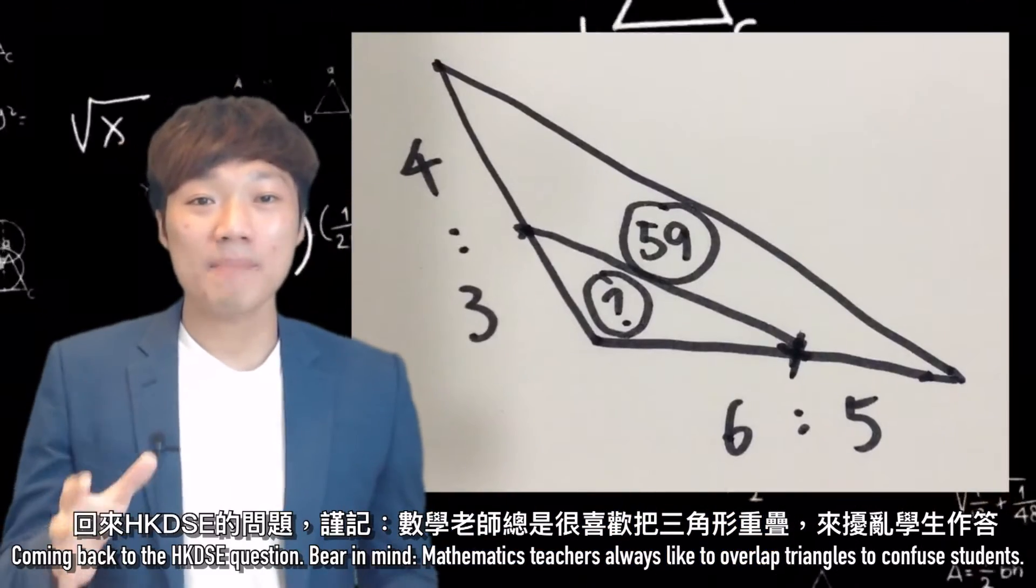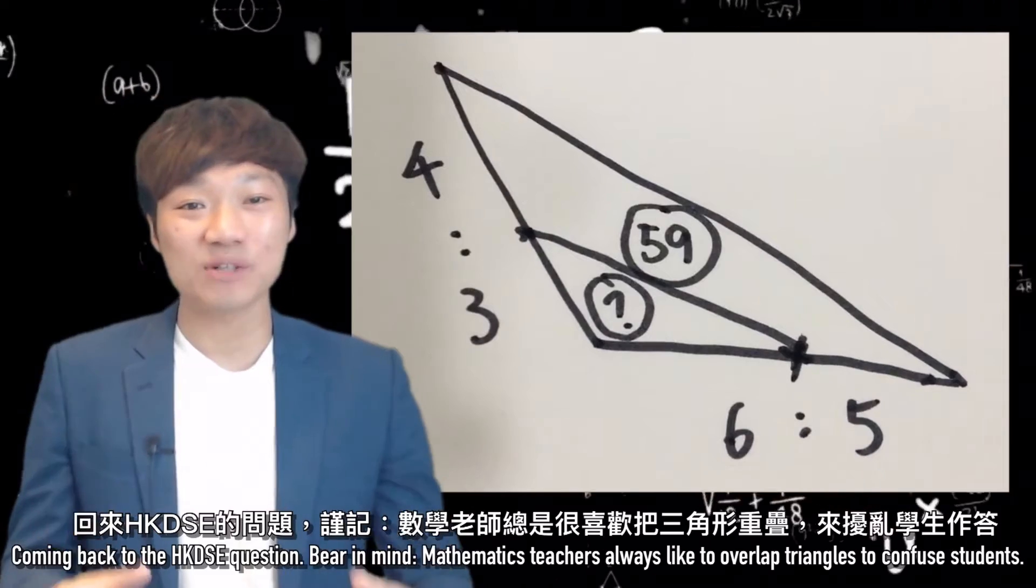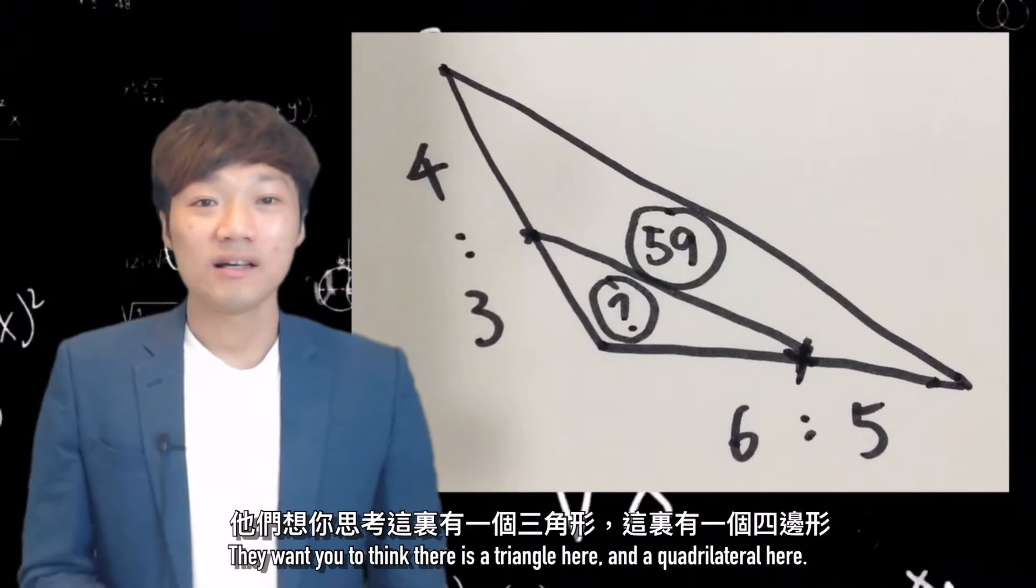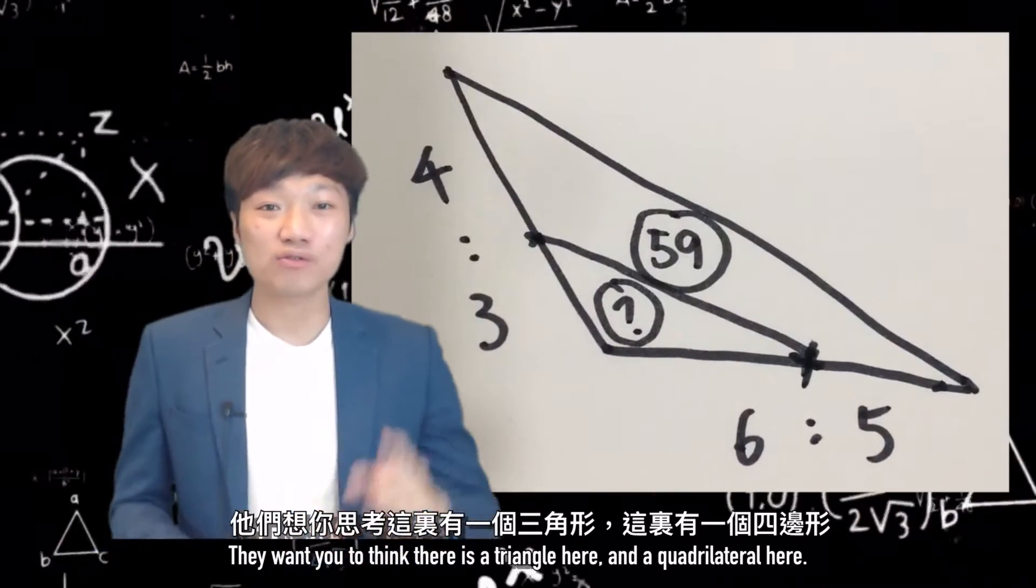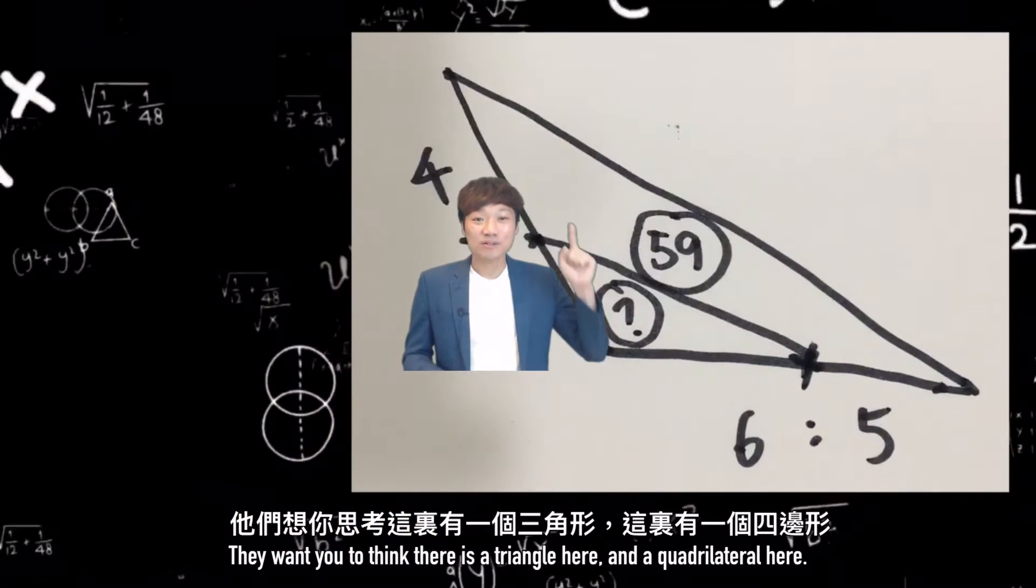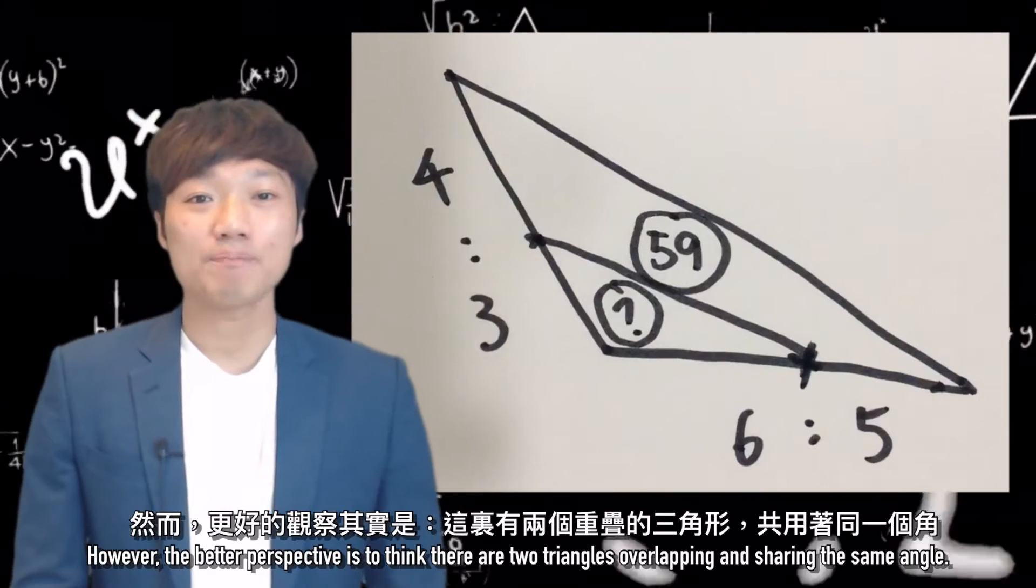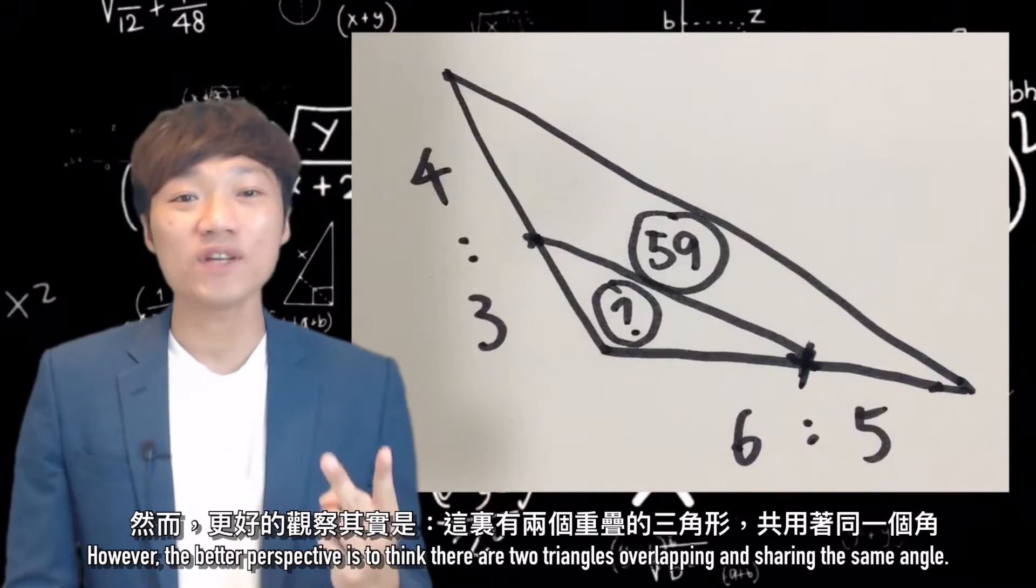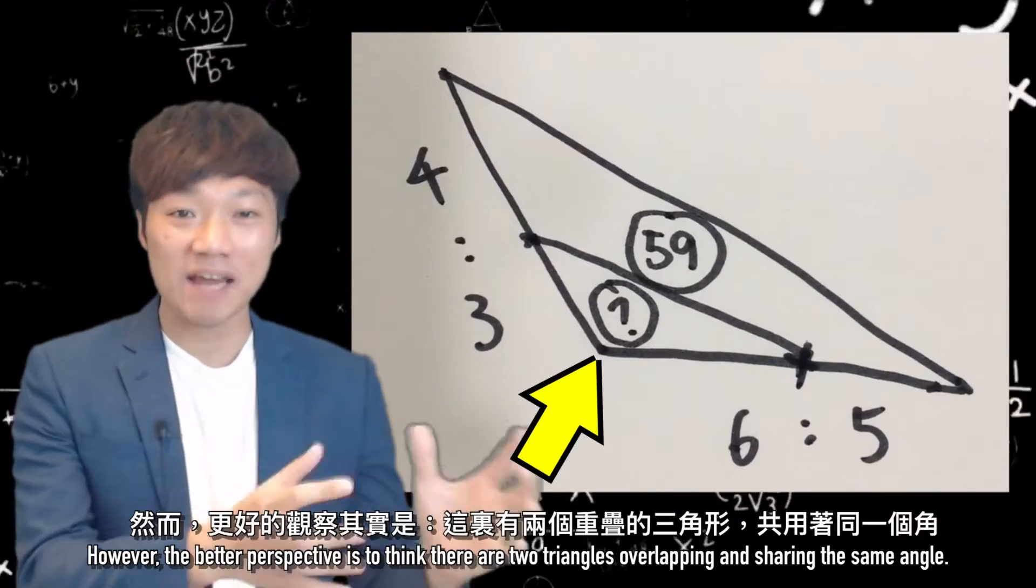bear in mind, mathematics teachers always like to overlap triangles to confuse students. They want you to think there is a triangle here and a quadrilateral here. However, the better perspective is to think there are two triangles overlapping and sharing the same angle.